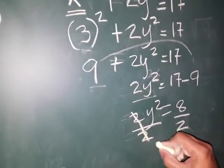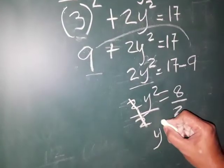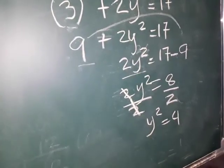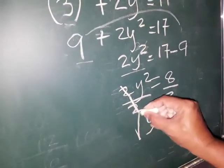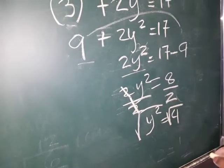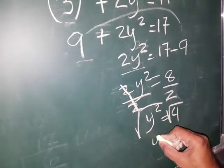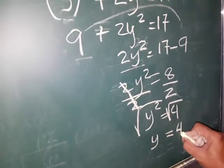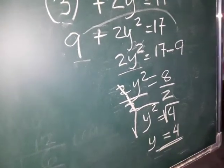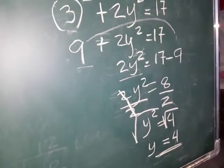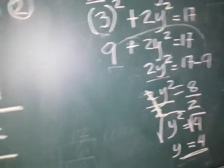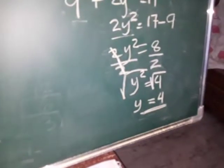So we have 2y squared over 2 equals 8 over 2 — cancel. Then we have y squared is equal to 4. The same way, putting a radical sign on both sides, then we have y is equal to 2. So our values are x is equal to 3 and y is equal to 2, for the equations x squared plus 2y squared equals 17 and x squared minus y squared equals 5.